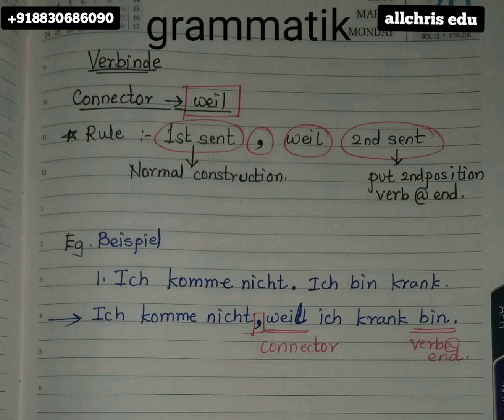You have to make a sentence in this manner. The reality is that you are not coming, and you have to give the reason why. Because means nothing but 'weil', W-E-I-L. So 'I am not coming' — put the connector 'weil' — and then whatever the second sentence is, the reason why you are not coming, you copy and paste it at the end.